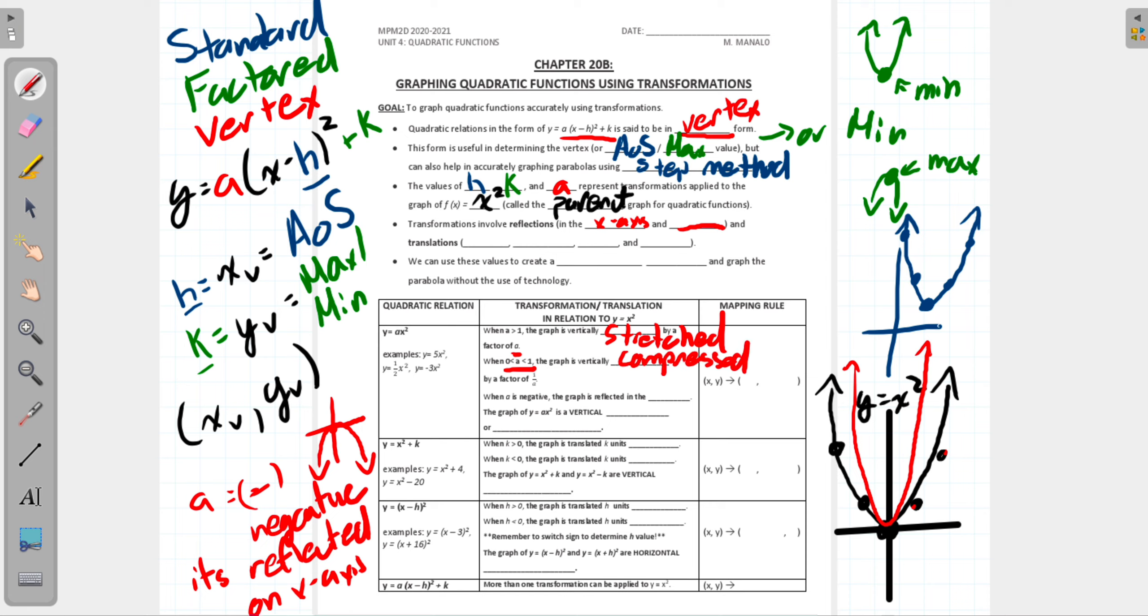When a is between zero and one, then we say it's compressed. All that means is it's going to be much wider looking than the one we're working with, that original one. That's what a compressed parabola will look like, by a factor of one over a. When a is negative, the graph is reflected on the x-axis, which is something we had talked about. It's already reflected, so now it's going to open downwards. The graph of y equals ax² is a vertical stretch or compression. There might be more specific language that your teacher's looking for in that part.